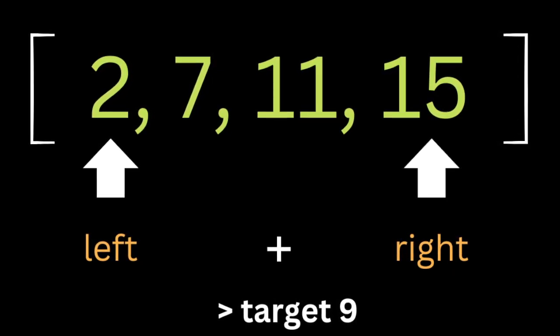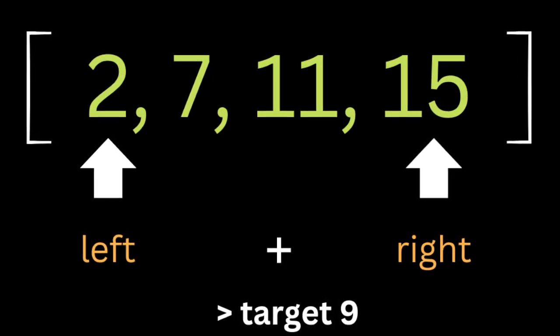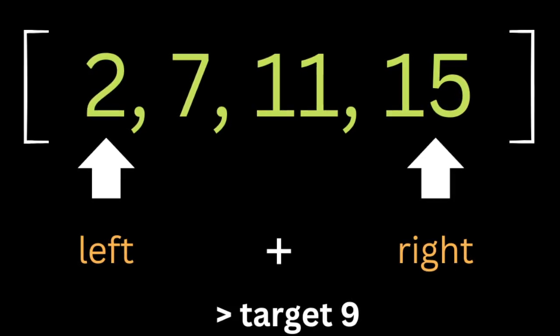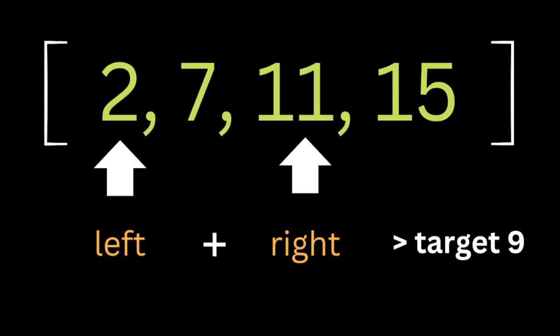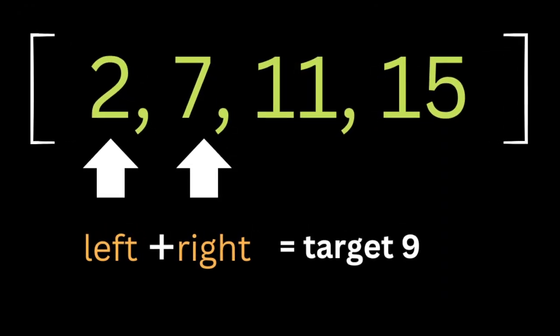So we're going to have two pointers, one to the left and one to the right. After that, we're going to sum up the two pointers and see if it's equal to the target number. If true, just return the left and right. If it's smaller, we move the left to the next number. If it's larger, we move the right pointer to the previous number.